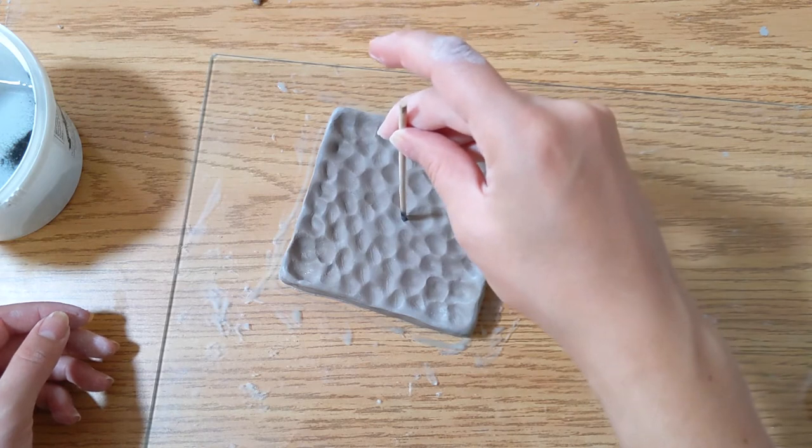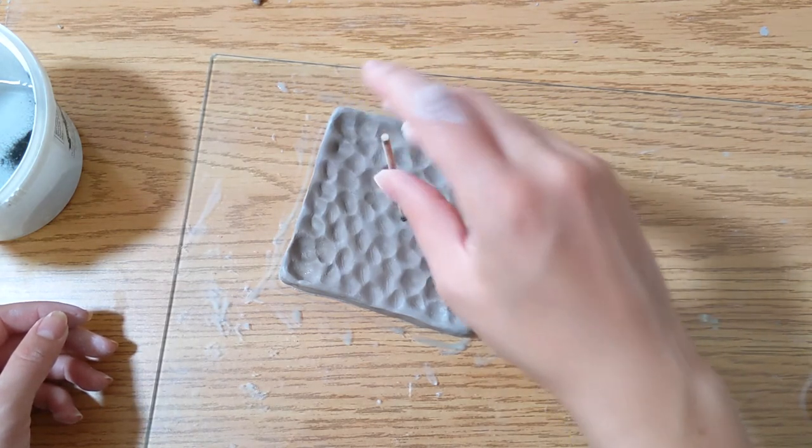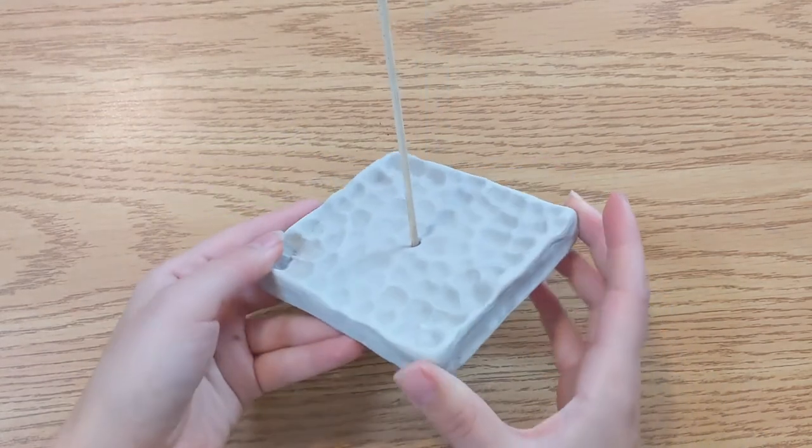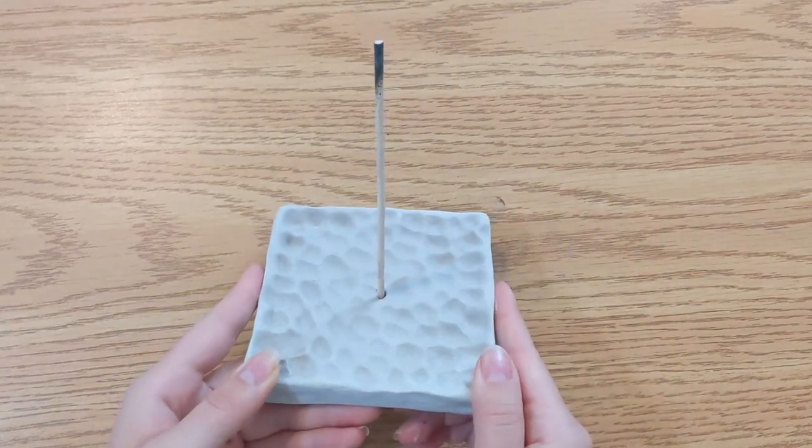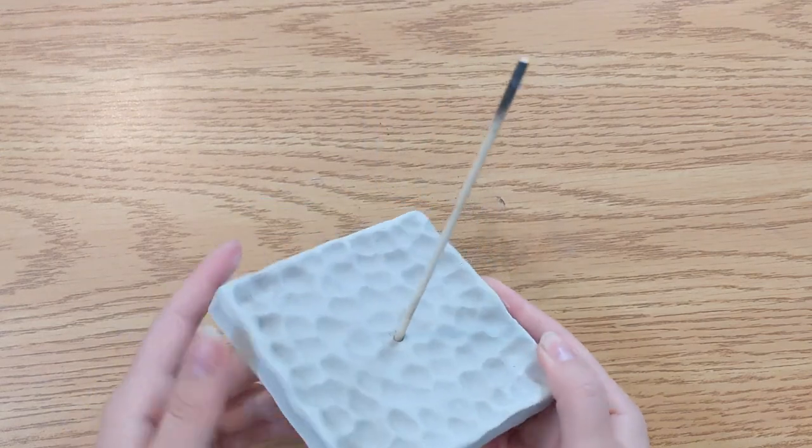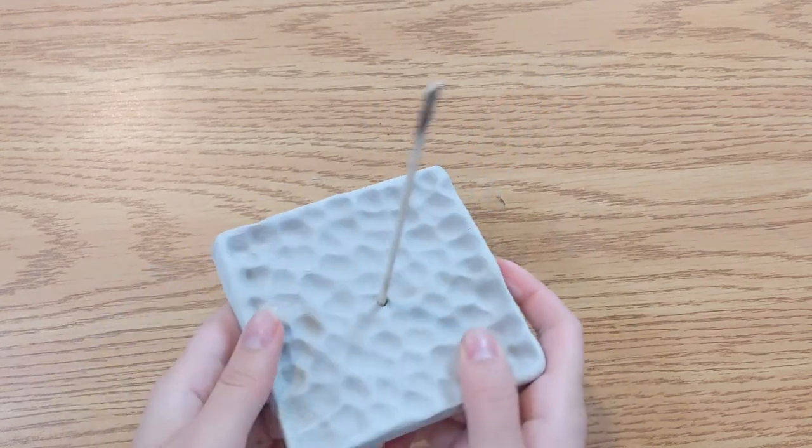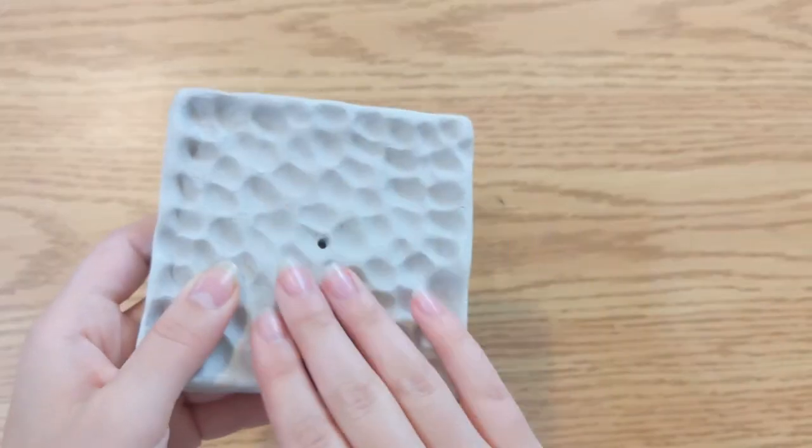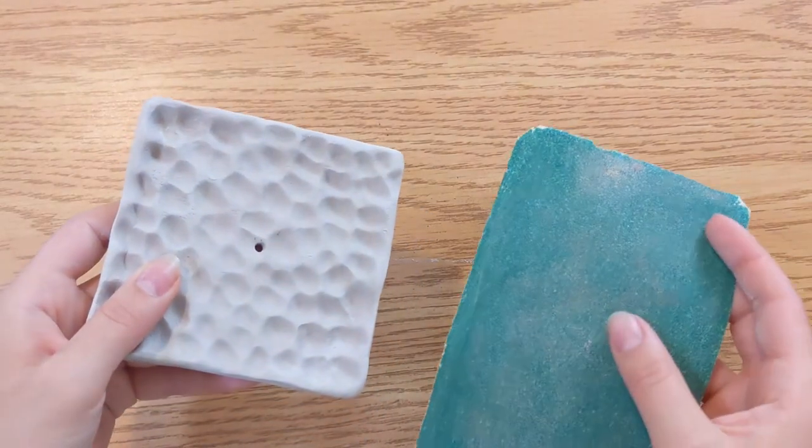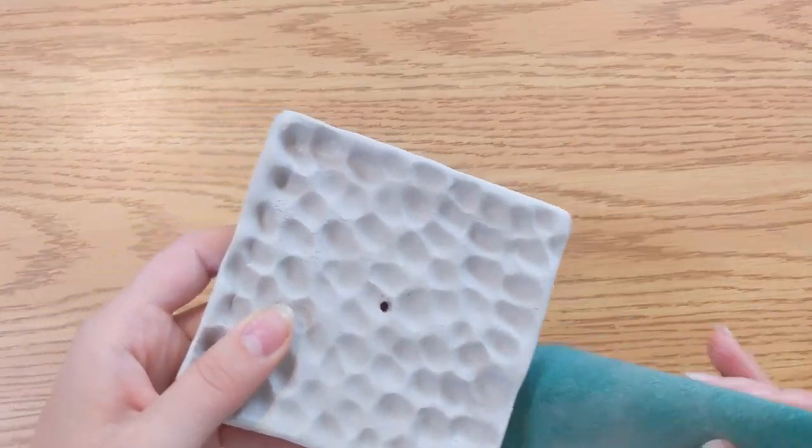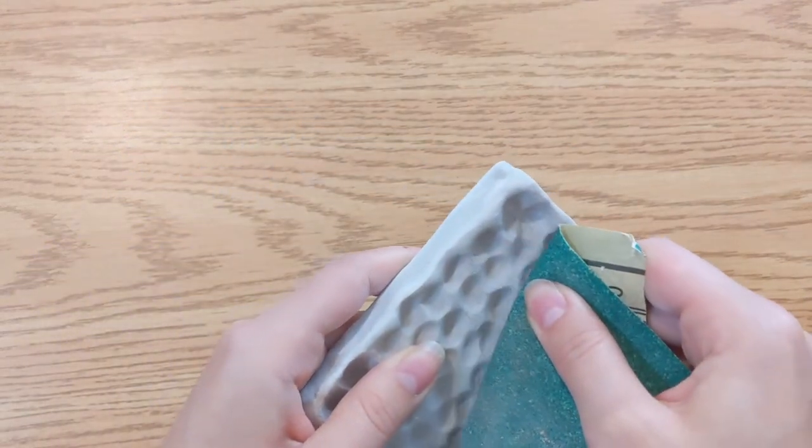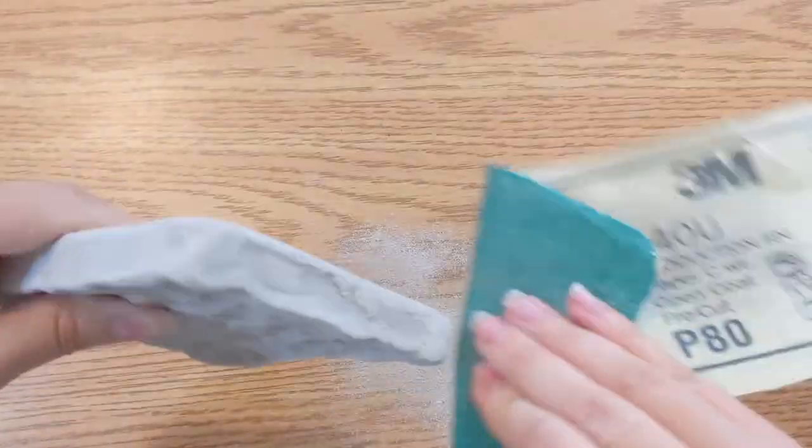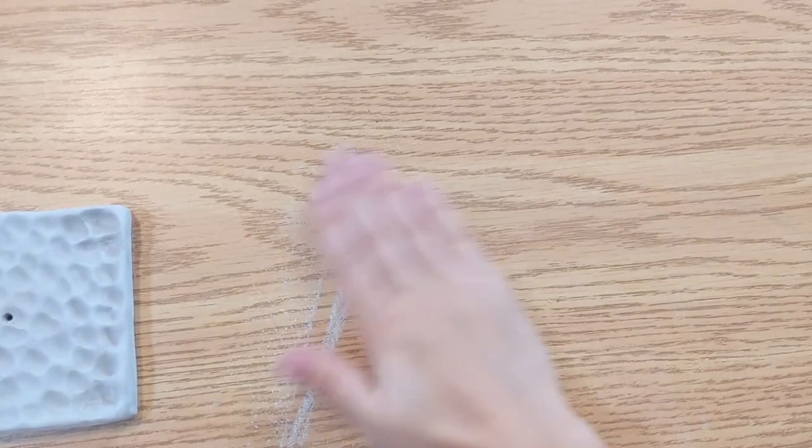So it ended up taking a lot longer to dry than I expected. Instead of taking the 24 hours, it took three days to get to this lighter gray color which indicates that it's fully dry. Once yours is fully dry, you can go ahead and pop out the stick by just twisting lightly and it should come out really easily. This part's optional, but if you want to get rid of any bumps on the side, I just grabbed a fine grit sandpaper and went over all the bumps that I saw on the top and on the sides.